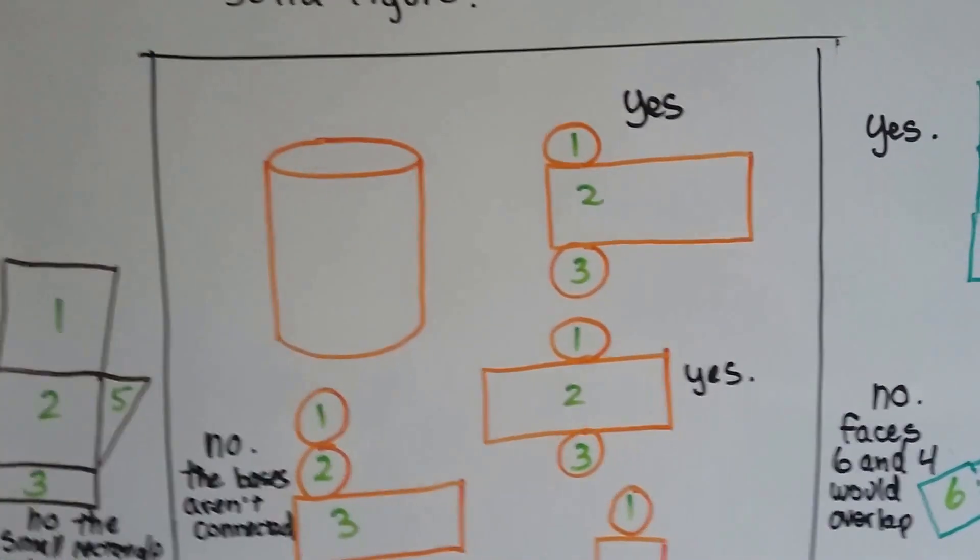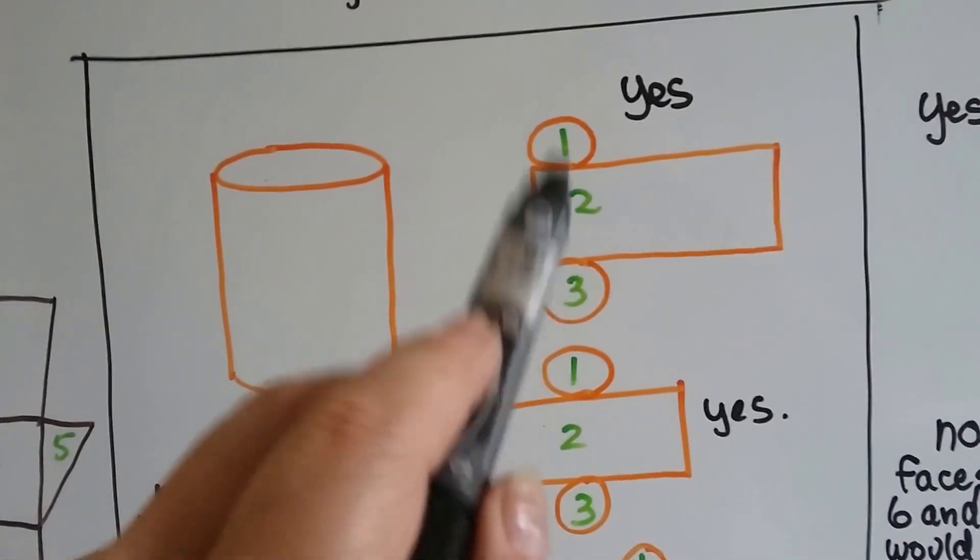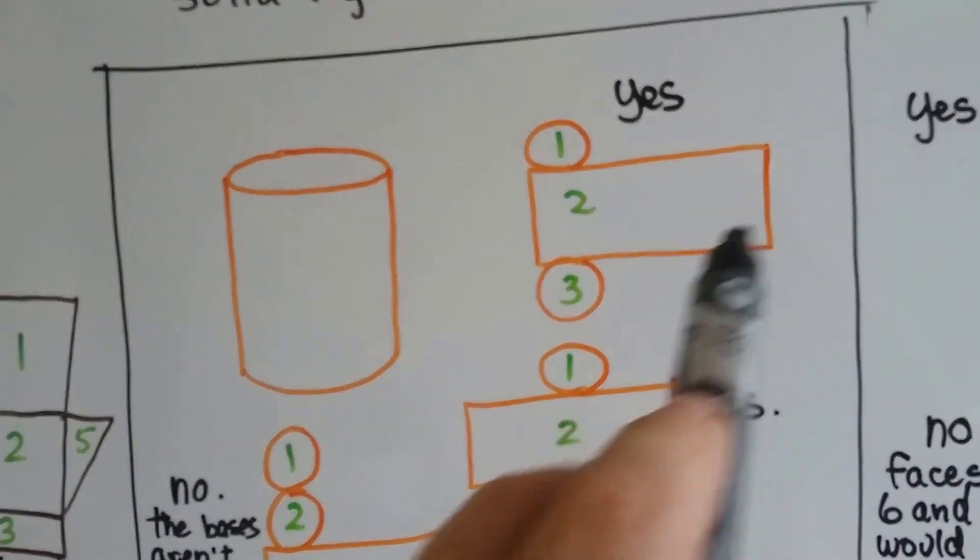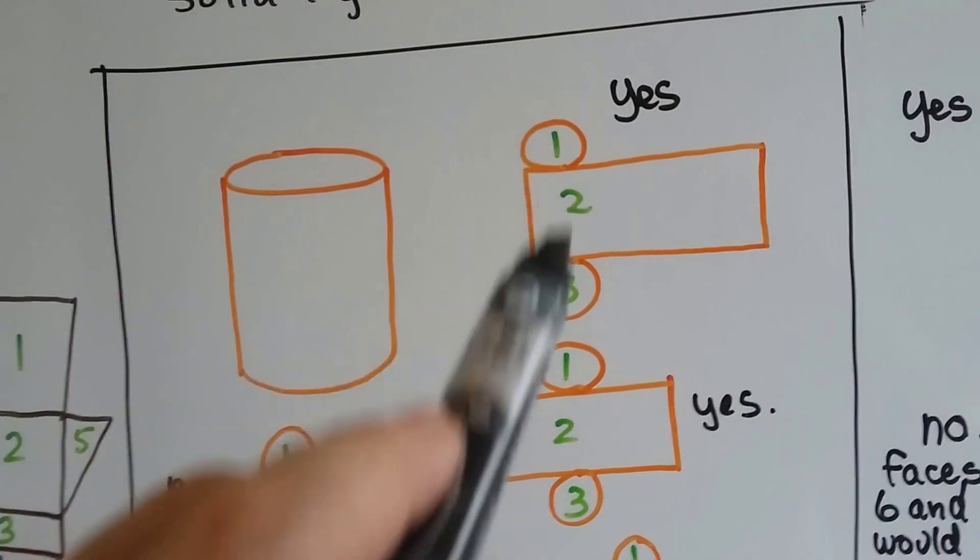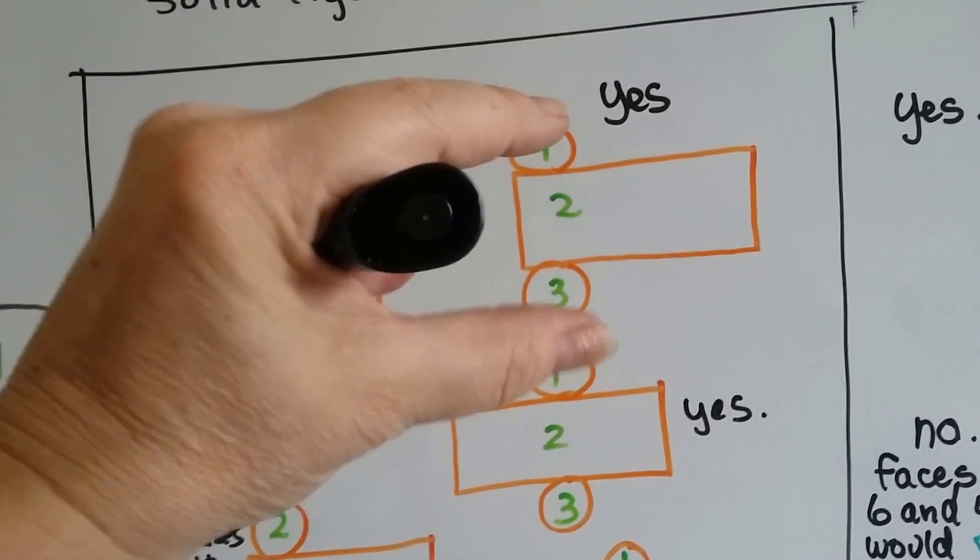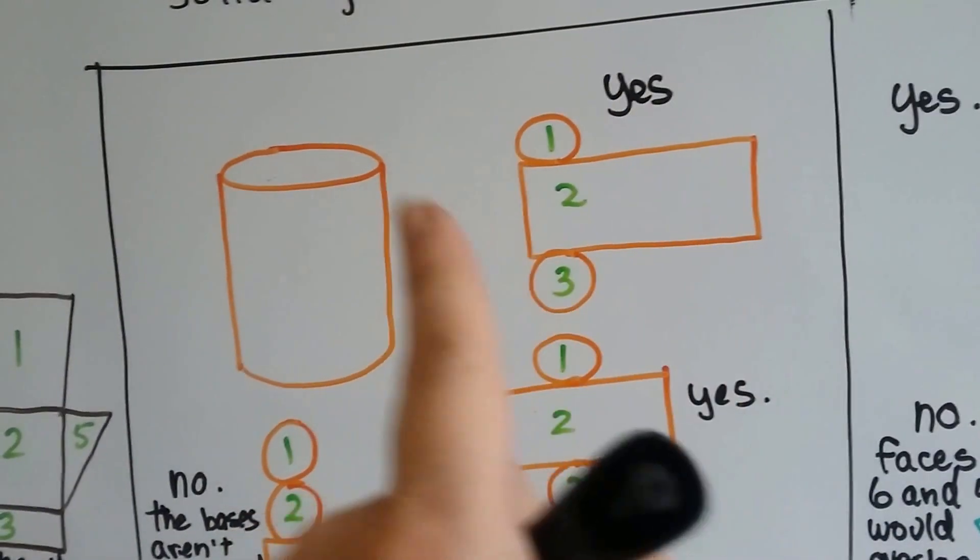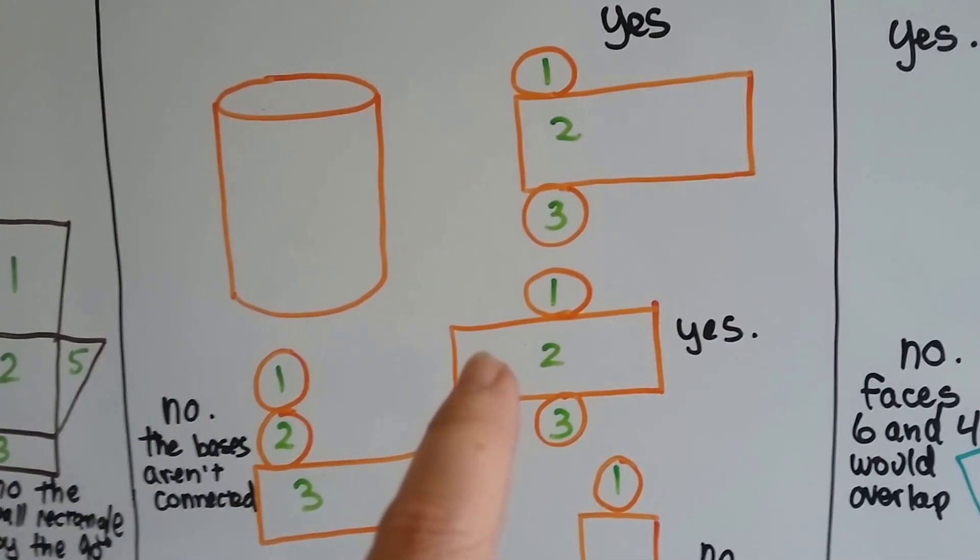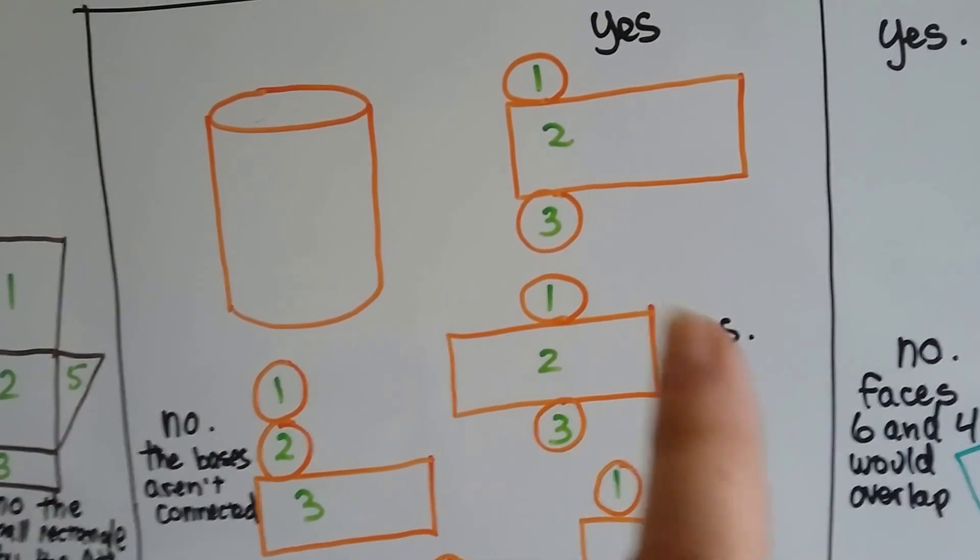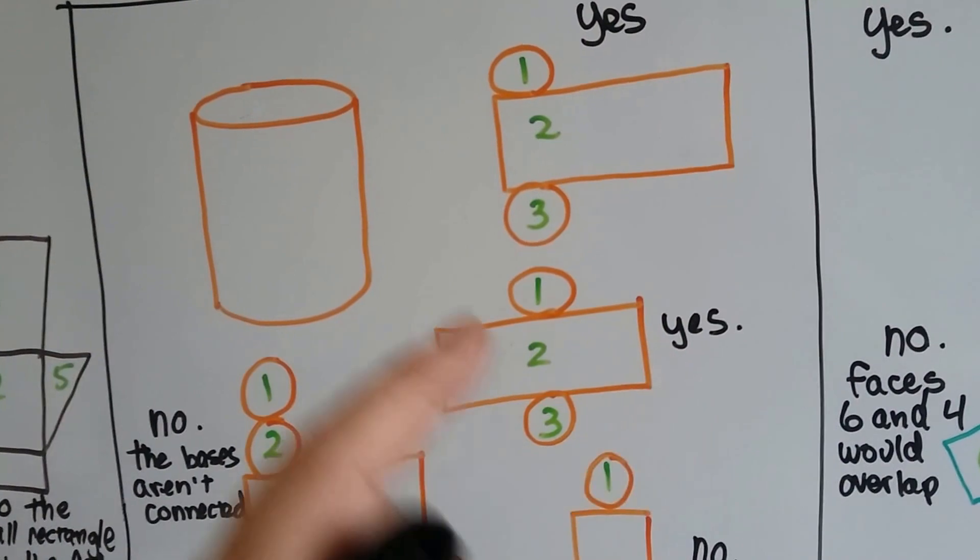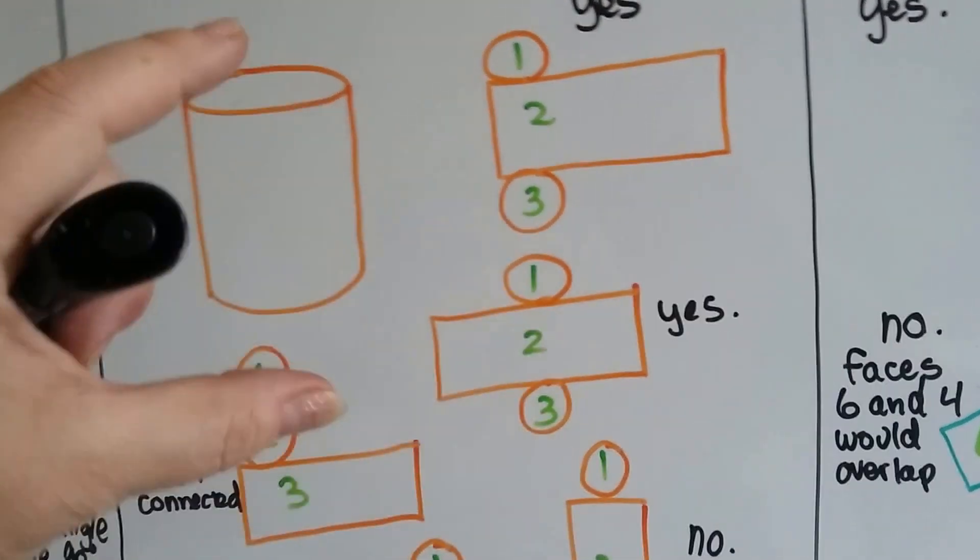So what if we had a can? Yup, this would work because if we unfolded this, it would turn into a big rectangle. And then we would have our base, one and two. In this one, parts one and three would fold and then this would wrap around it and it would make that can. And this one also. This one, we could turn number two into a circle and glue it right there and then fold one and three down to close the tops.